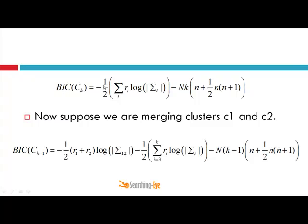This is the BIC score at level K: negative 1/2 times the summation over all i of ri times log of the determinant of the covariance matrix. Here, ri is the number of data points, K is the number of clusters, and n is the dimensionality of the feature vector. This is the BIC score at level K, and now we merge clusters C1 and C2.